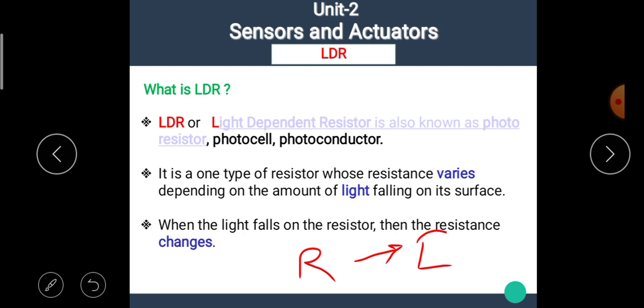As the light intensity increases, its resistance decreases. The operating principle of LDR is very simple. As the light intensity increases, the resistance of LDR decreases. When the light falls on the resistor, then the resistance changes.